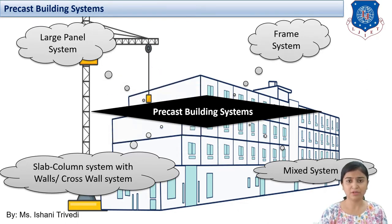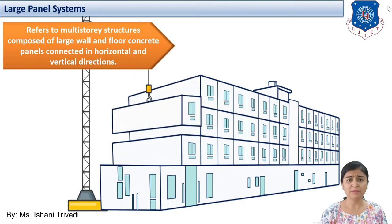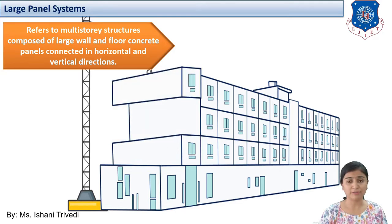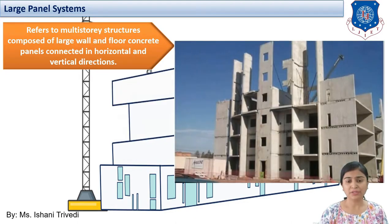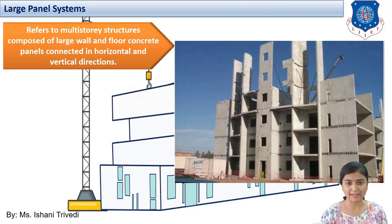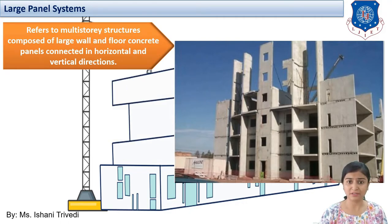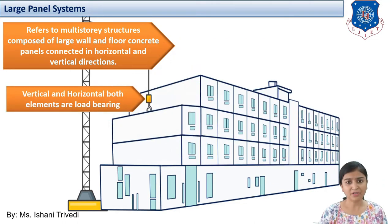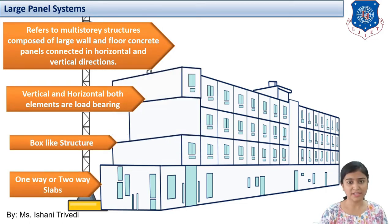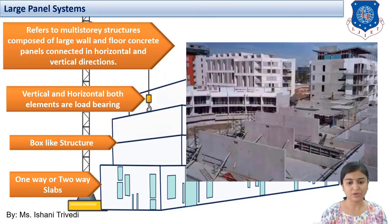Let us try to understand what these are. First, if we talk about the large panel systems, the name itself says it is referring to multi-story or large construction. Multi-story structures are composed of large wall and floor concrete panels connected in horizontal and vertical directions. As you can see, this is a construction of a tall structure — it will go for high rise buildings. Vertical and horizontal both elements are load bearing in this system. It is a box like structure. The slabs will be either one way or two way.